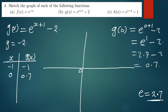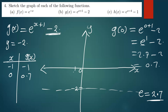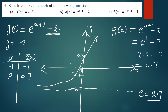We can now sketch g of x. We draw the horizontal asymptote at y equals negative two. We plot the coordinate (negative one, negative one) and (zero, 0.7). From these points the curve goes like this — it's a standard exponential shape shifted down, approaching the asymptote at y equals negative two.